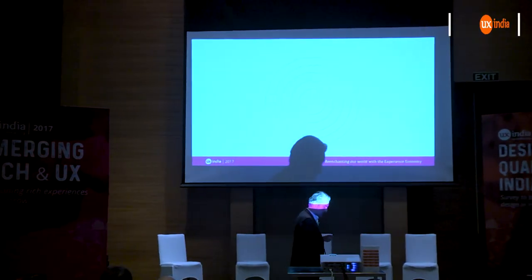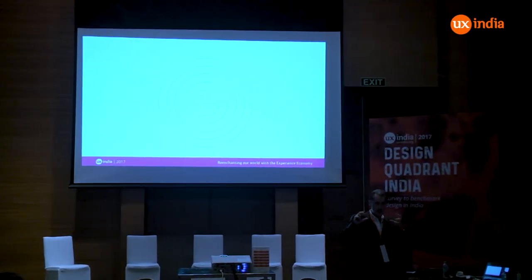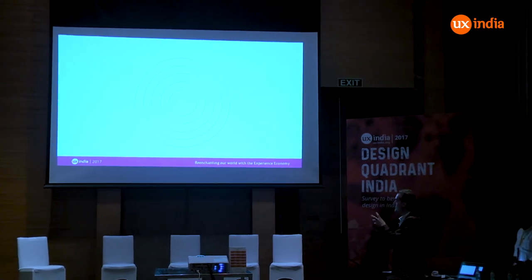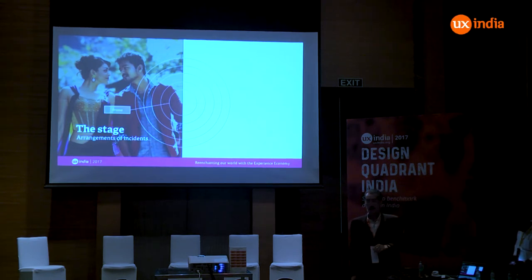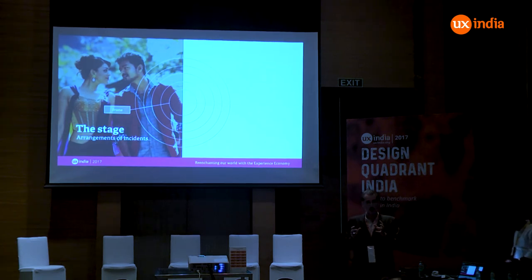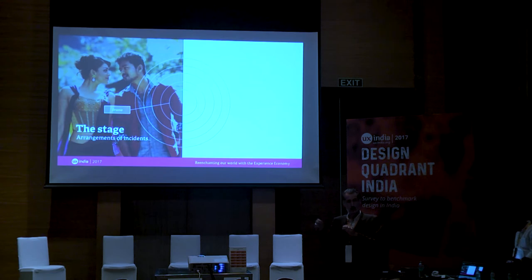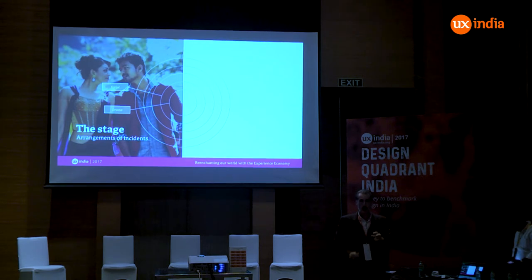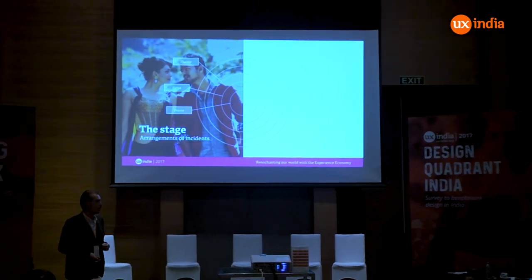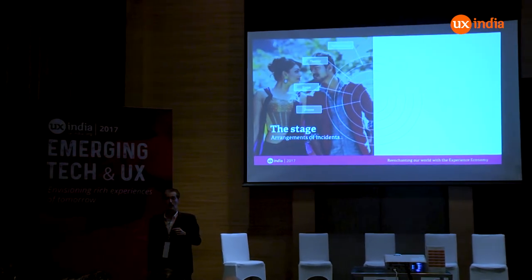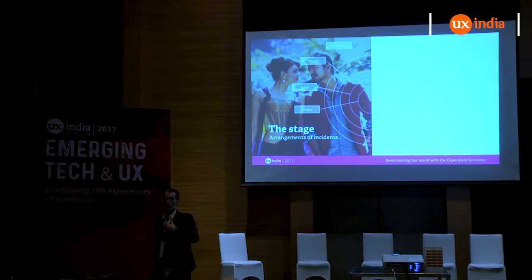I propose to go further on the stage vision that Pine and Gilmore try to give. From the theatre view, we have some cycles. The first one is linked to drama. Drama, in Greek, means just 'to do' — what we want to do. Then we have the script — how we deliver what we want to do. Then we have the theatre itself, because we need a stage. And we have the performance — the way you deliver the experience.